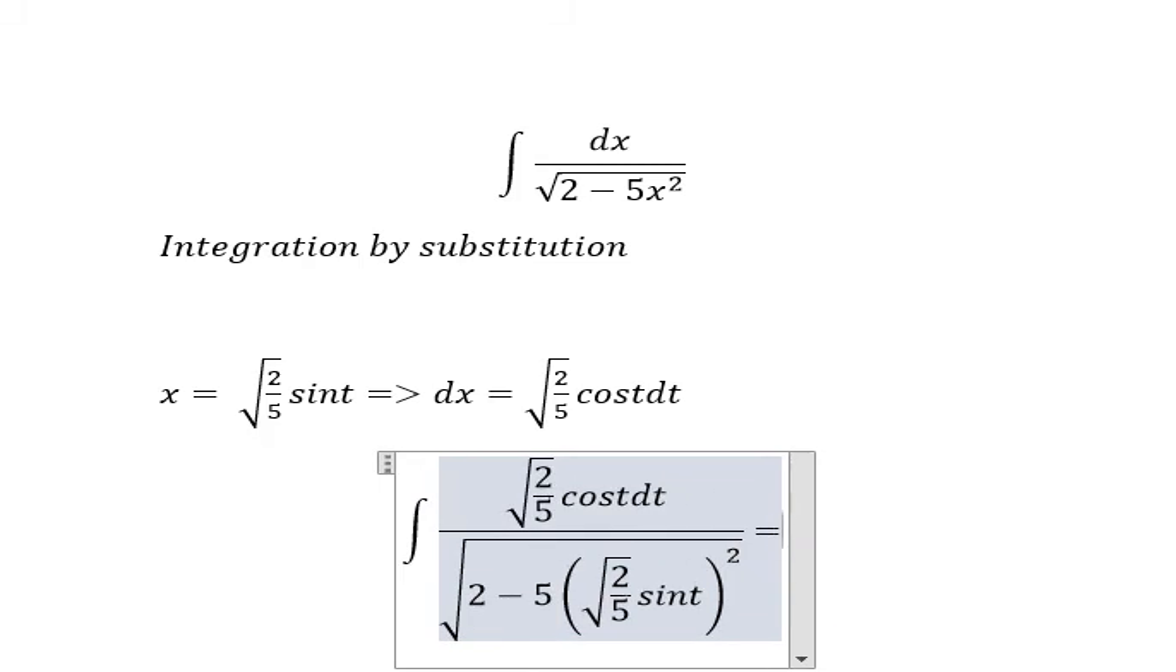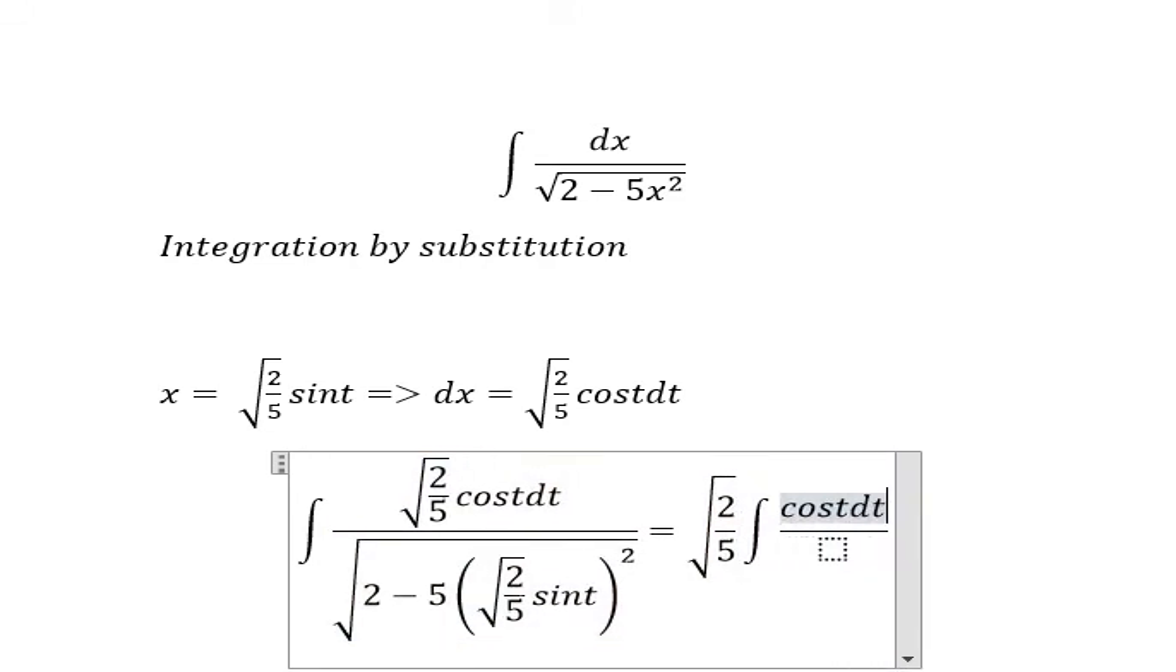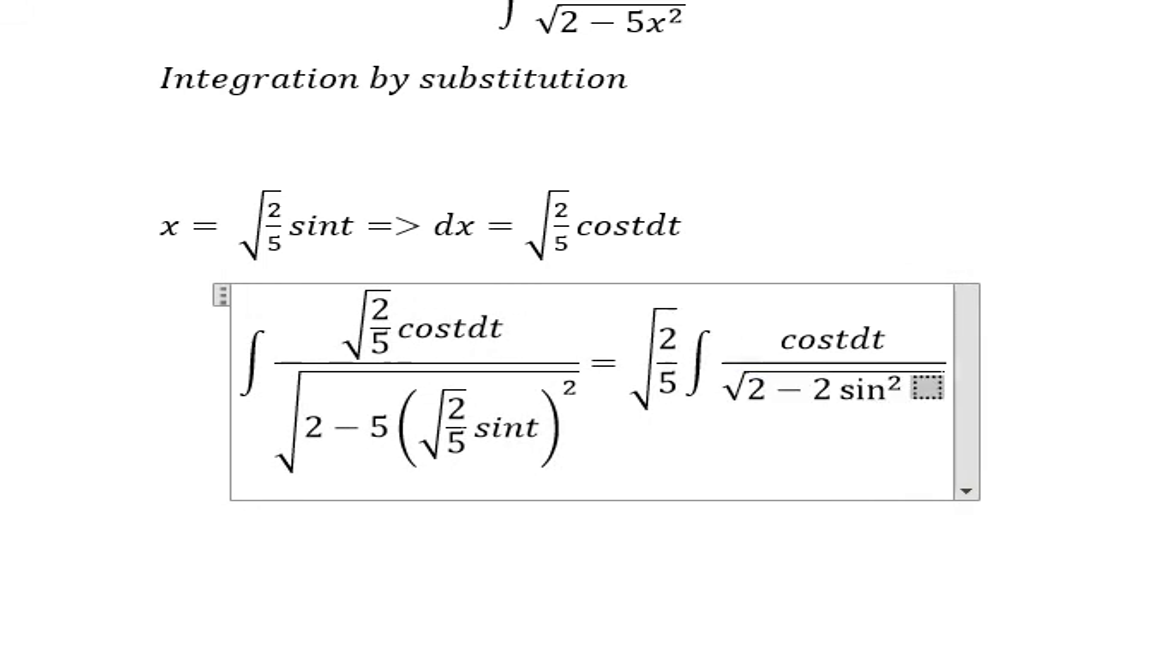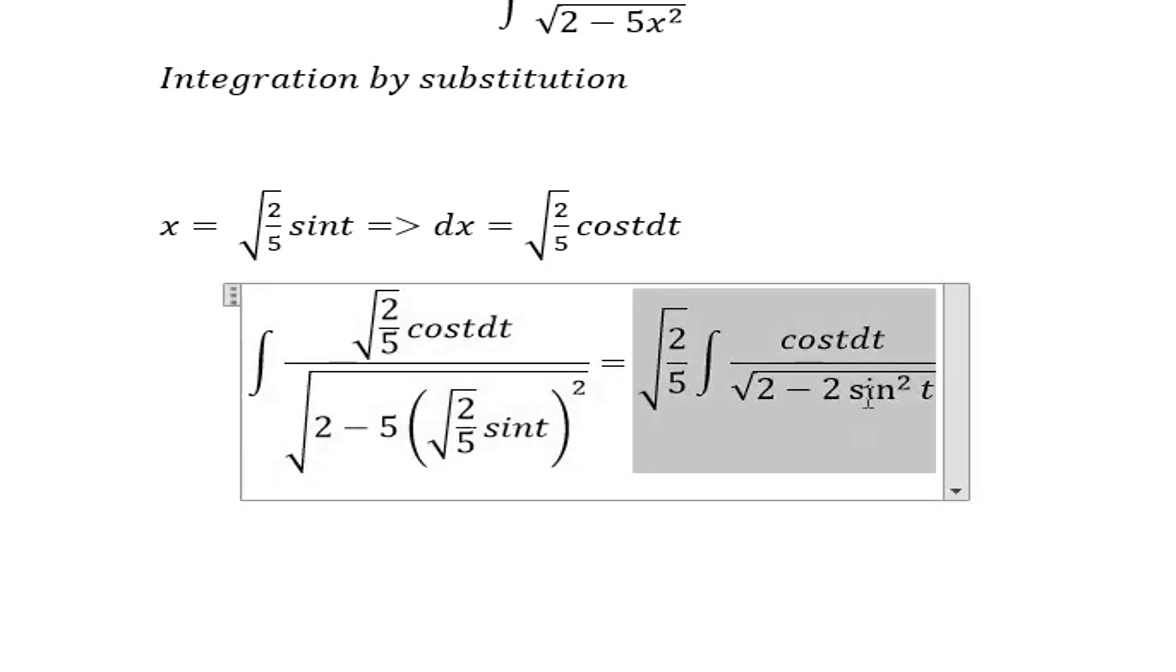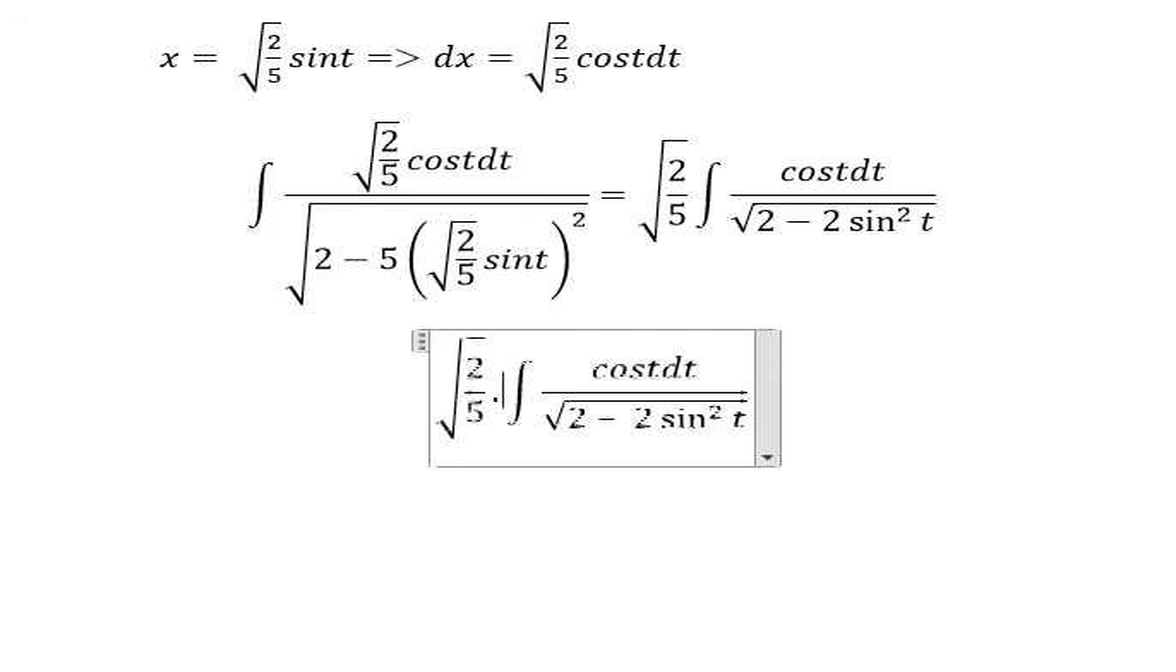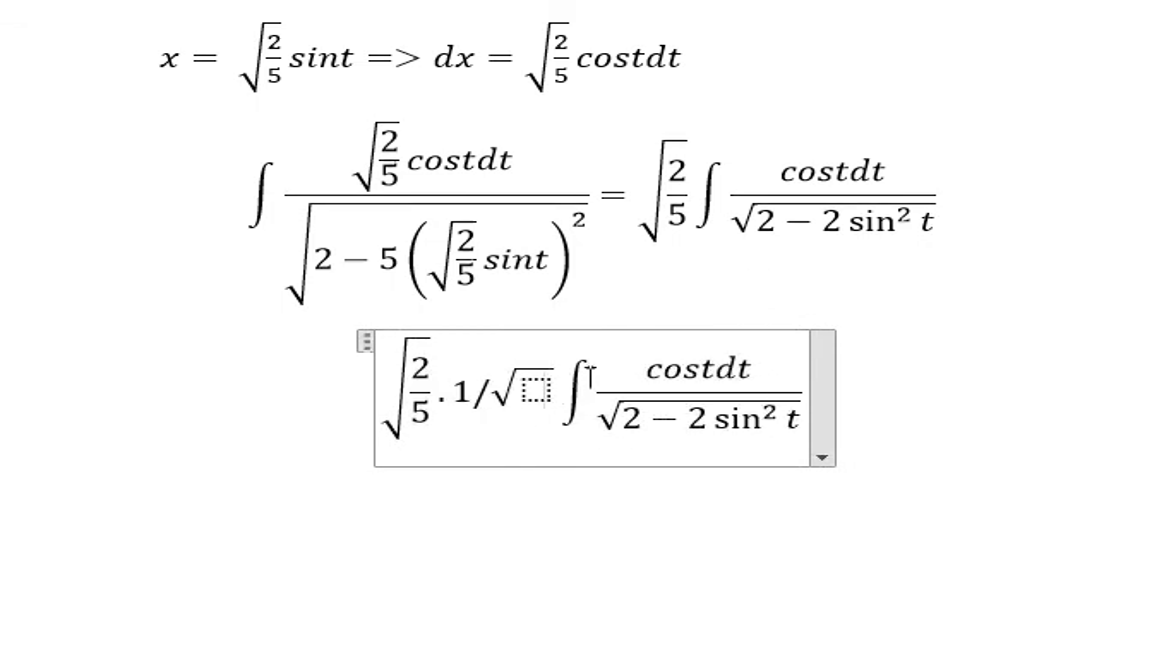Now we just simplify this one. We put this one outside. We have cos t dt. Now we have only 2 minus 2 sin squared t. We put this one outside. So that's why we got 1 over the square root of 2. And this is about 1 minus sin squared t.